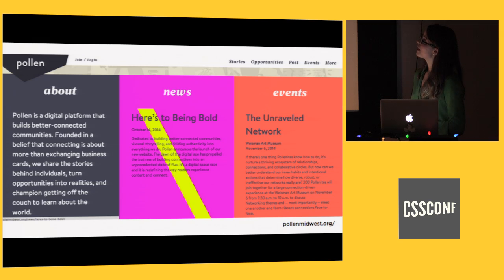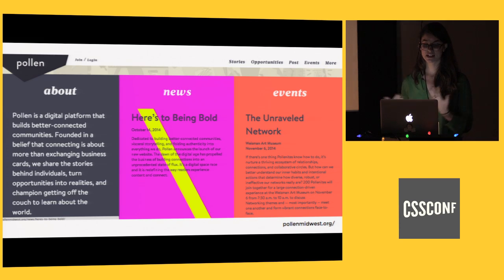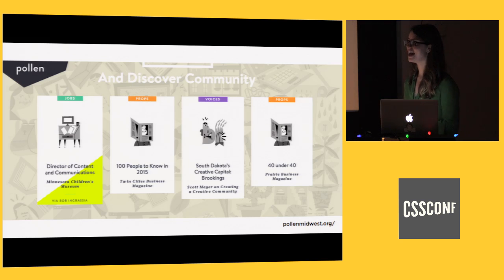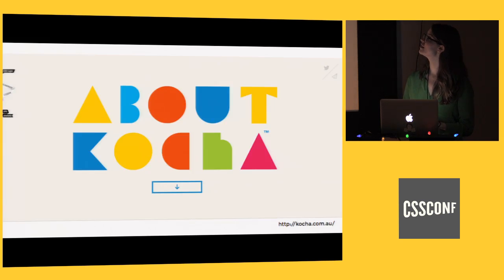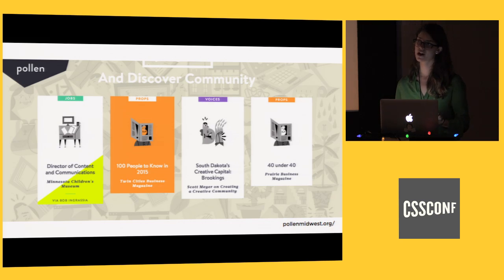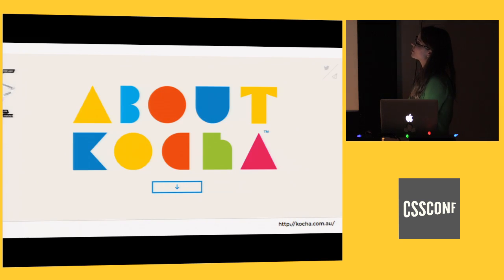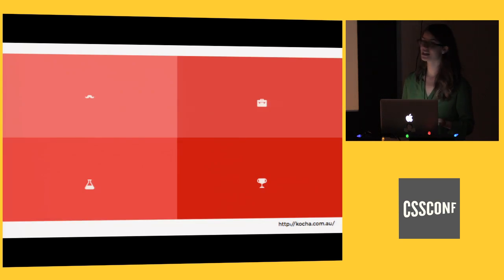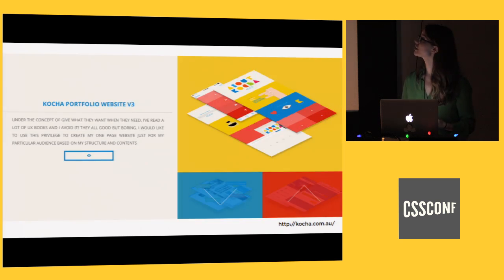I want to show some examples of sites using color boldly and really well. This is a site for Pollen Midwest — it struck me because they use colors I sort of thought were off limits, like magenta and bright yellow, and a wider palette than I normally use. As a visual designer I typically pick one or two accent colors and let everything else stay neutral, but they've used all these bright accent colors and through mastery of design still made it look slick and professional. This site is really memorable because of its use of color. This is a portfolio for an Australian designer — a bold, nice use of primary colors that makes a portfolio website, which we've all seen a million of, really stand out.